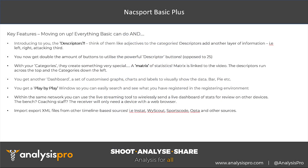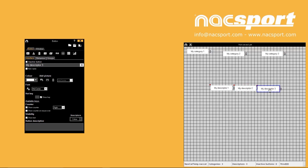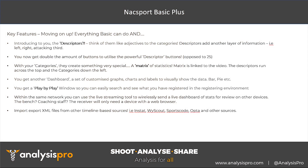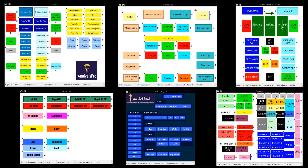Moving on up to Naxport Basic Plus — it really does take your analysis to a new level, and this is due to the descriptor buttons. Think of those buttons like adjectives to the categories — they add another layer of information. Using football as an example: if you see a player cross the ball, you press 'cross' as the category and then you can add more information — descriptor buttons like from the left, from the right, from the wing, from deep, cleared by the defender, resulted in a shot, resulted in a goal. Now you don't just know it was a cross, you know a lot more about that cross.